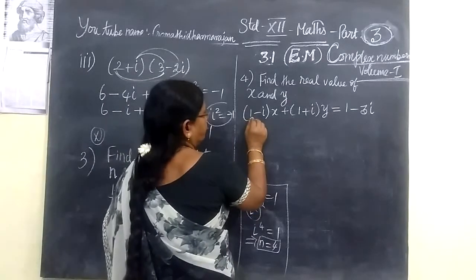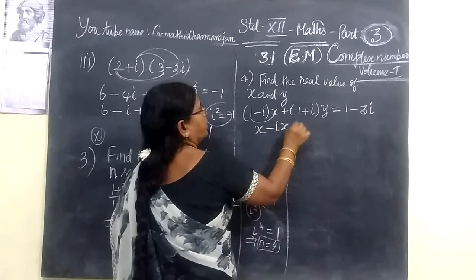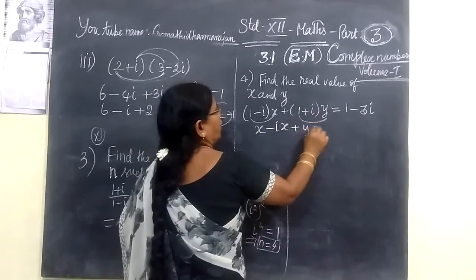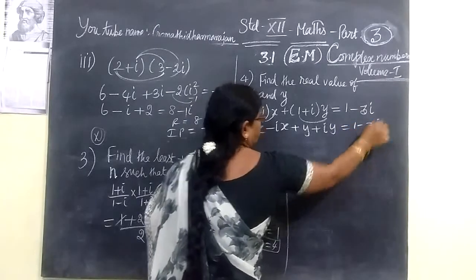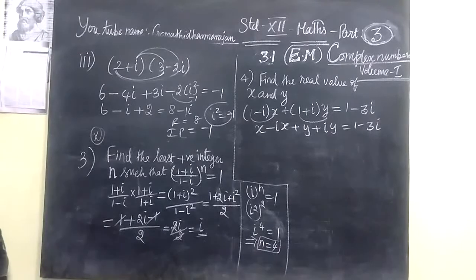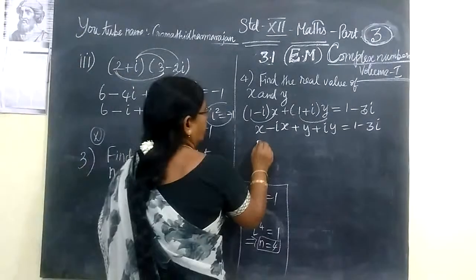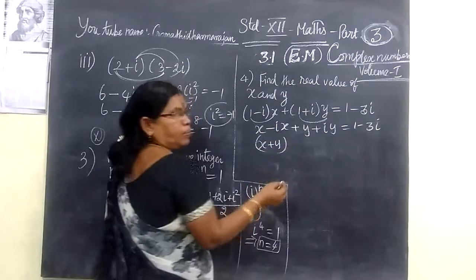This is my next problem. So (1 + x)(x - ix), then (1 + y)(y + iy) equal to 1 - 3i. You can equate real part and imaginary part. So you have to write the real part, x + y, and write the imaginary part.